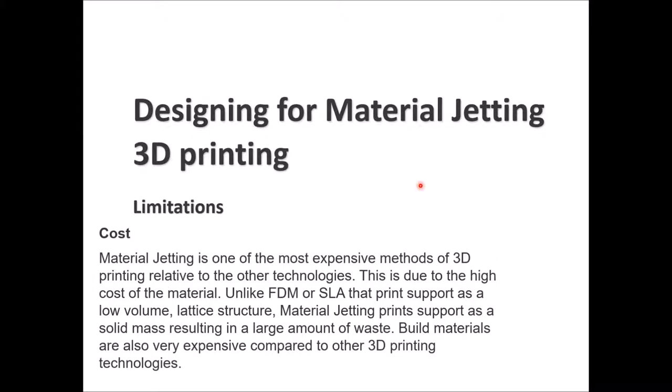The rubber-like material used also has a lack of elongation, which leads to issues in rubber applications. Temperature resistance and strength are considered low, so it cannot be used for functional testing or real-world applications. Regarding cost: the material jetting technology and its materials are expensive, and material cost reflects the high price of the printers themselves — very different from FDM and SLS printers, which are relatively cheap in both printer and material cost.